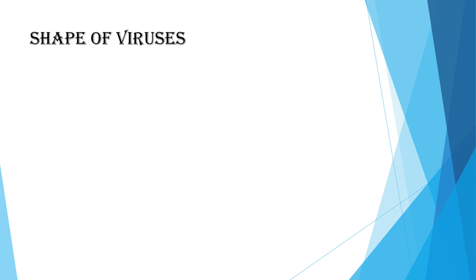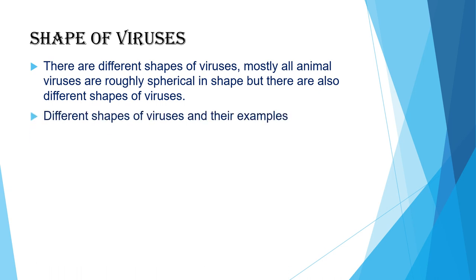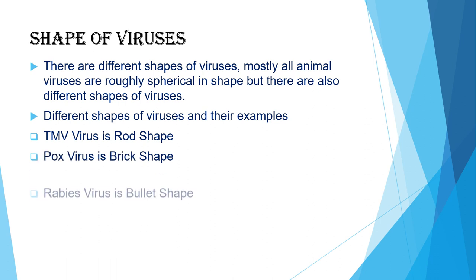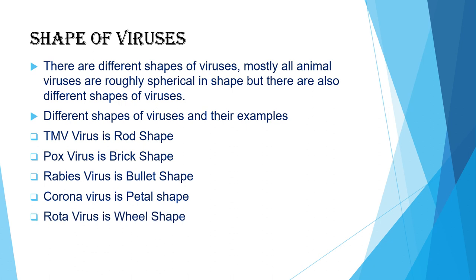Let's see the shape of viruses. There are different shapes of viruses. Most animal viruses are spherical in shape, but some viruses show a variety of shapes. TMV, that is tobacco mosaic virus, is rod shape; poxvirus is brick shape; rabies virus is bullet shape; coronavirus is petal shape; rotavirus is wheel shape and astrovirus is star shape.